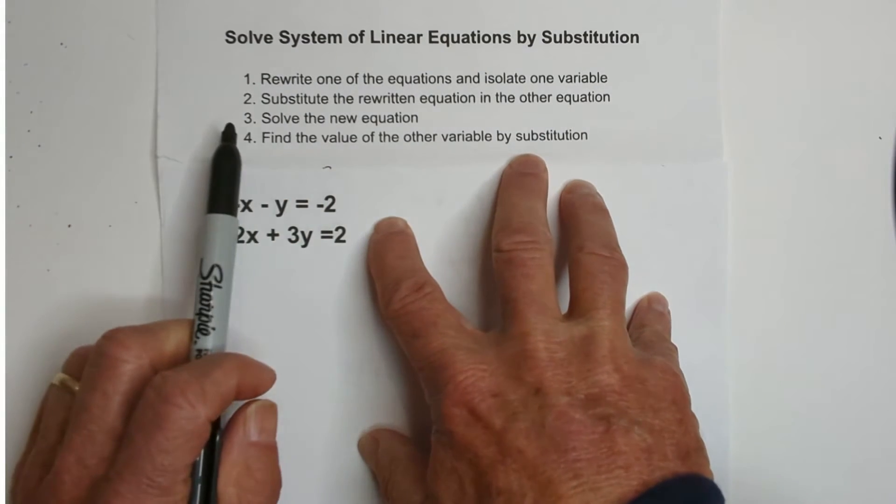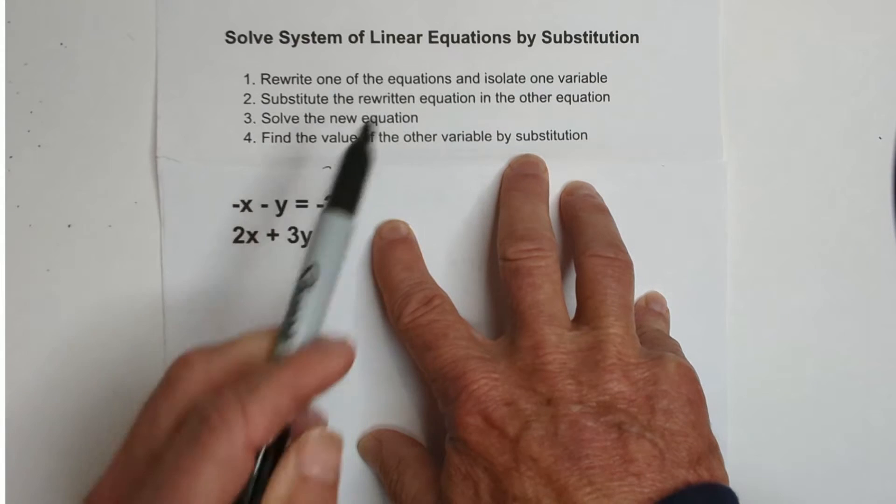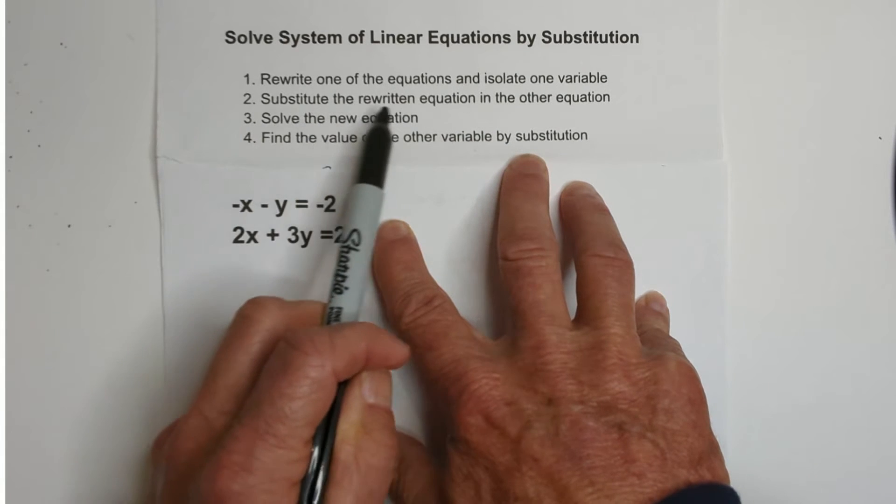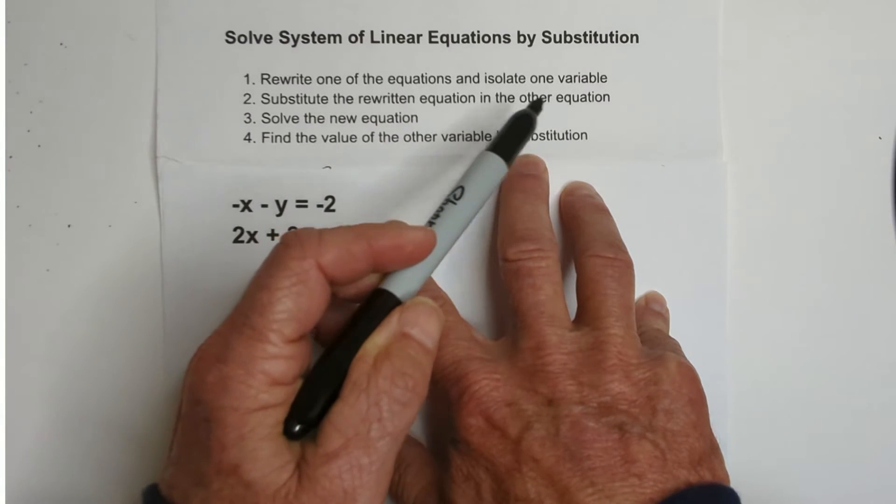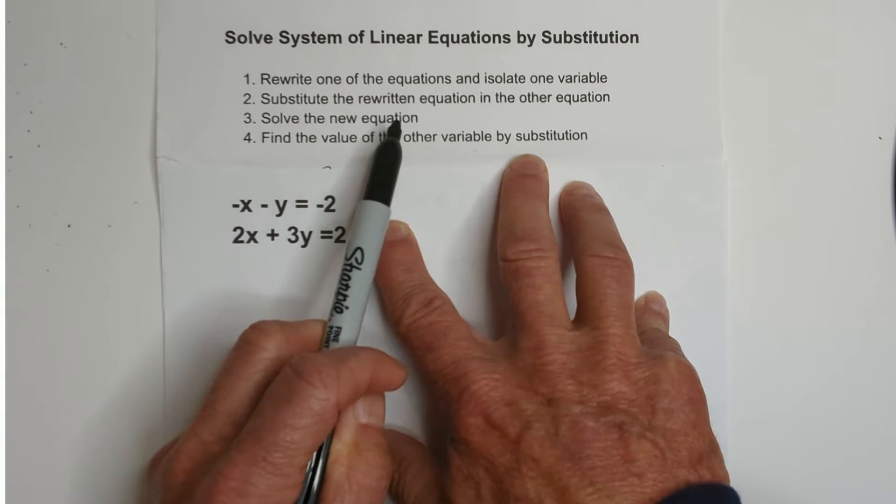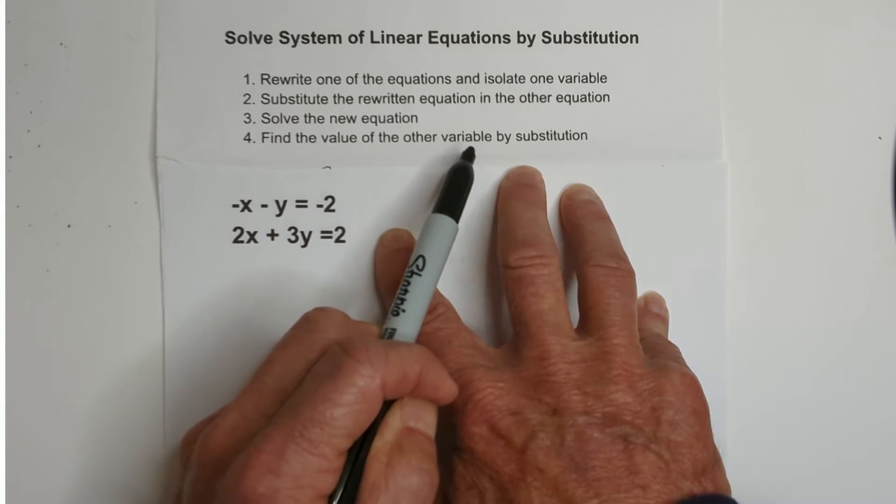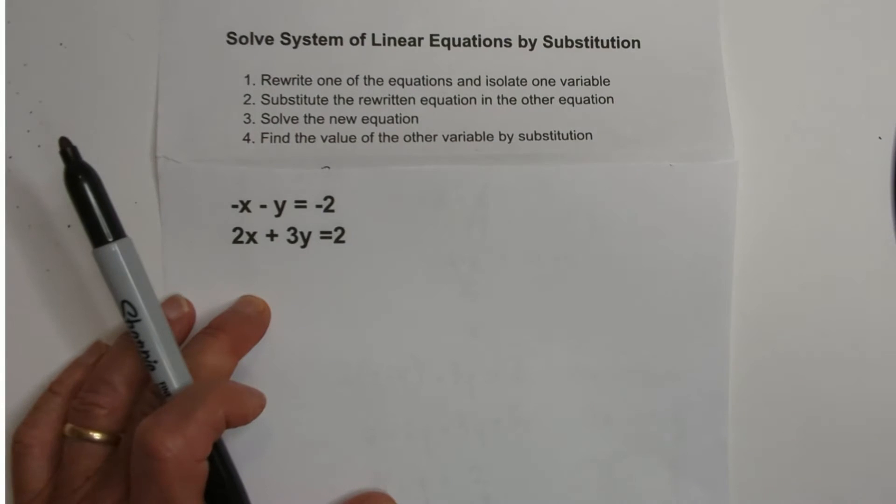Basically, here's what we're going to do. We're going to first rewrite one of the equations and isolate one variable. Then we're going to substitute the rewritten equation into the other equation. Then we're going to solve this new equation. Then we're going to take the answer from step 3 and find the value of the other variable by substitution. So, let's get started.